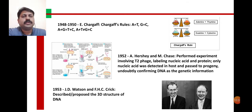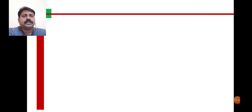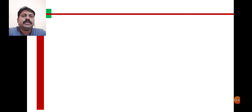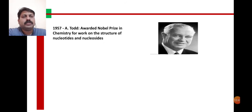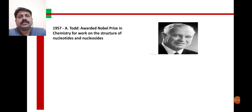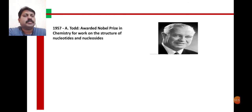For the work of Watson and Crick, there is one more contributor — Wilkins. Rosalind Franklin was working in Wilkins' laboratory. Using the knowledge from Franklin's X-ray crystallographs and Wilkins' contribution, Watson and Crick proposed the model of the DNA structure.